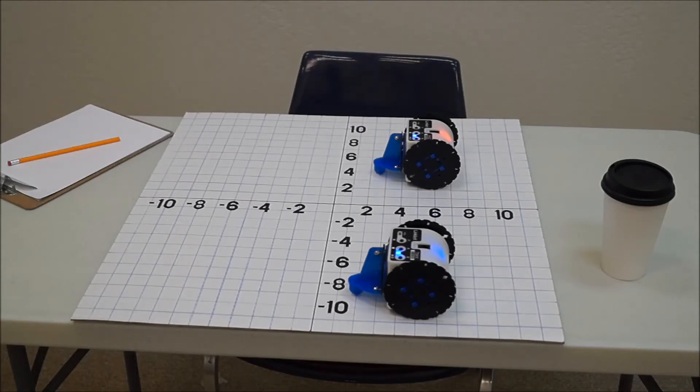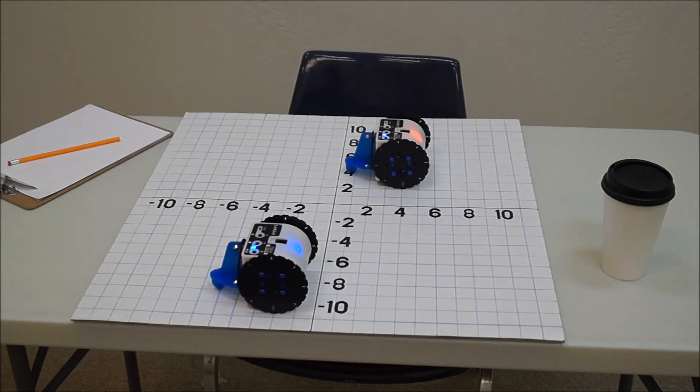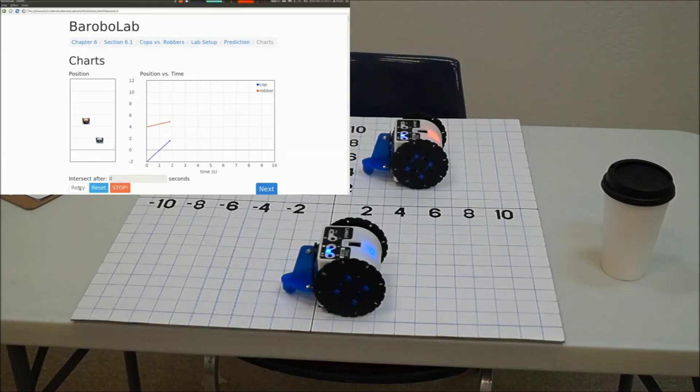The teacher pushes reset to move the robots back to their initial positions and enters four seconds this time. The robots execute the motion precisely.